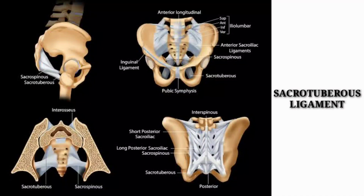The sacrotuberous ligament originates from the PSIS, lateral sacrum, and coccyx, and inserts at the ischial tuberosity. Although this ligament does not have any direct action on the sacrum, its extensive tensile strength limits nutation of the sacrum.